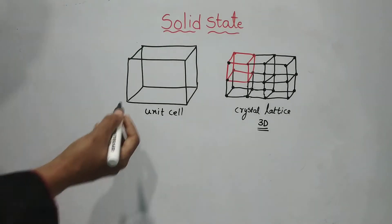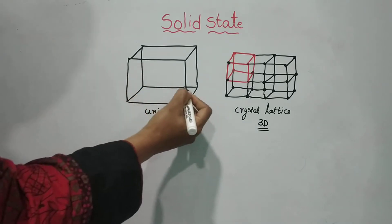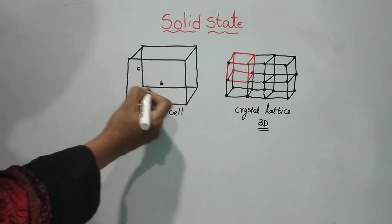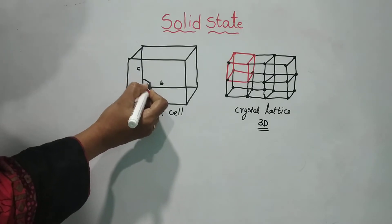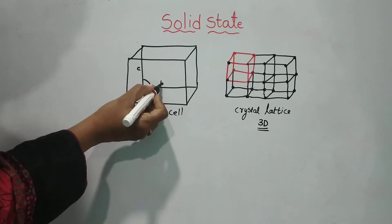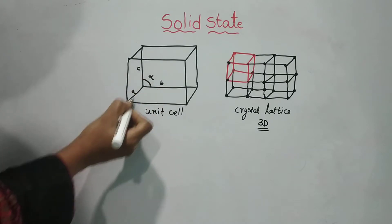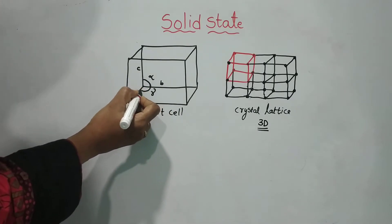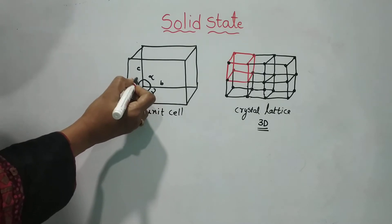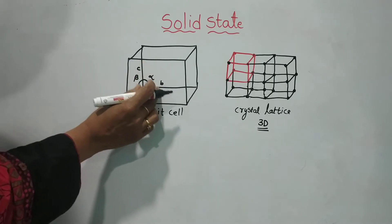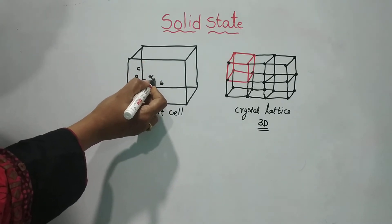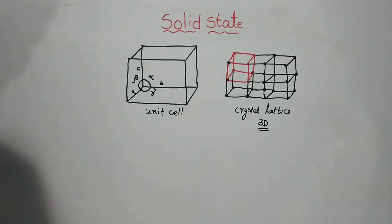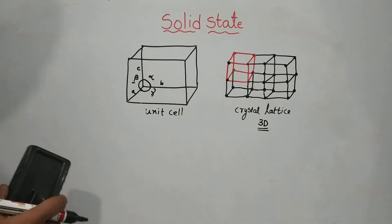A unit cell has edges — edge a, edge b, and edge c — and the angles between edges: alpha (α) is the angle between b and c, gamma (γ) is the angle between b and a, and beta (β) is the angle between c and a.